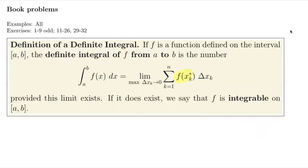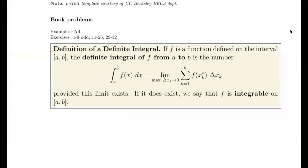We multiply height times width for our rectangles. x_k star is a point within the k-th subinterval — maybe it's a midpoint, a left endpoint, or a right endpoint in each of those subintervals. This gives us a very general definition of a definite integral, and we'll probably work with something more specific most of the time, particularly when we talk about more advanced tools for calculating the definite integral and establishing theorems.